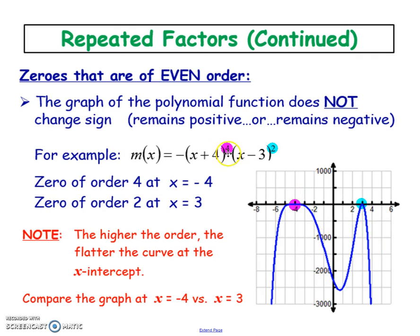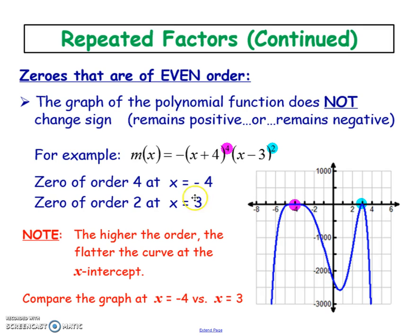The number of the exponent does matter — it tells you about the shape of the graph. If you have a larger exponent, the graph is a lot flatter near the x-intercept, versus a smaller exponent which is a lot sharper. These little details help you create a more accurate visual picture of your graph.